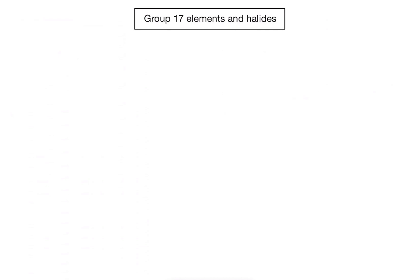In this video we're going to have a look at the reactions between the group 17 elements and their halides. We're going to be looking at these in solutions, so first of all we need to actually know what these solutions look like. Let's start off with the halogens.